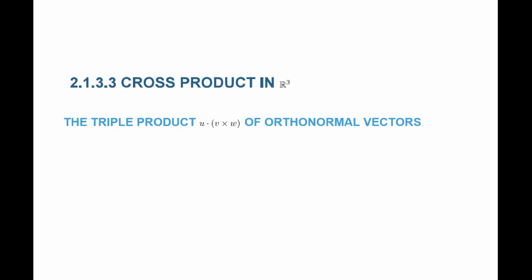The triple product of orthonormal vectors is equal to one. If I have a vector u whose size is one, a vector v whose size is one, and a vector w whose size is one, and if the three are perpendicular to each other, then the volume made by u, v, and w is equal to one. So u dot (v cross w) equals one when u, v, and w are orthonormal.